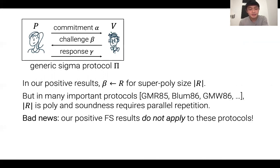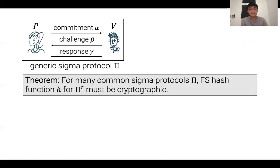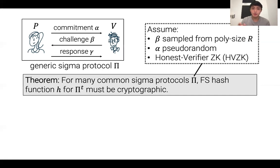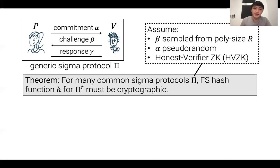Our positive Fiat-Shamir results do not apply to these protocols, and you can't hope for a simple compiler for GMR or Blum. Our theorem shows that for many common sigma protocols satisfying three properties — (1) beta is sampled from a polynomial-sized challenge space, (2) the first message alpha is pseudorandom, and (3) the protocol has honest-verifier zero-knowledge — the Fiat-Shamir hash function H that compiles the T-wise parallel repetition must be cryptographic, meaning you can use H to define a challenger-adversary game with a computational-statistical gap.